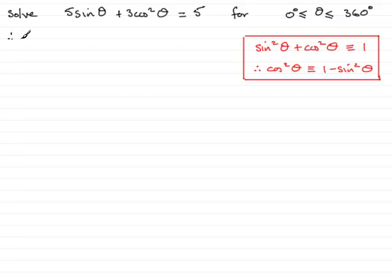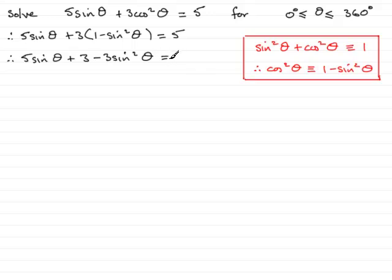If we do that, we therefore have 5 sine theta for the first term plus 3 multiplied by cos squared theta, which is now 1 minus sine squared theta. So I'll pop that in that bracket there and that equals 5. What we need to do now is expand this bracket. We've got 5 sine theta plus 3 minus 3 sine squared theta and this equals 5.